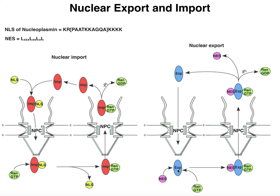Exportin is going to function in a slightly different way. The protein that has the NES targets it to the cytoplasm so it can leave the nucleus. In this case, both the protein with the NES and RAN-GTP are both going to simultaneously bind to exportin, forming a complex of exportin with the NES-bearing protein and RAN-GTP.